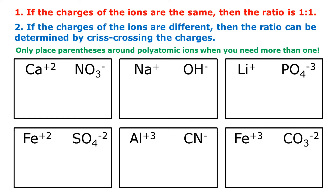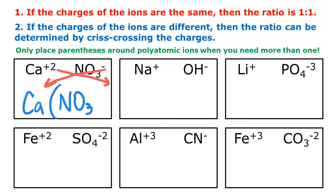For example, I have Ca plus two and NO3 minus one. They are different, so I crisscross and get Ca with subscript one and NO3 with subscript two. Because I need two of the nitrate, I put parentheses around it first before adding the two. So calcium nitrate is Ca(NO3)2. Next, I have Na with a positive one charge and OH with a negative one charge. I only need one of each, and because I only need one hydroxide, I won't put parentheses around it. So that's NaOH.